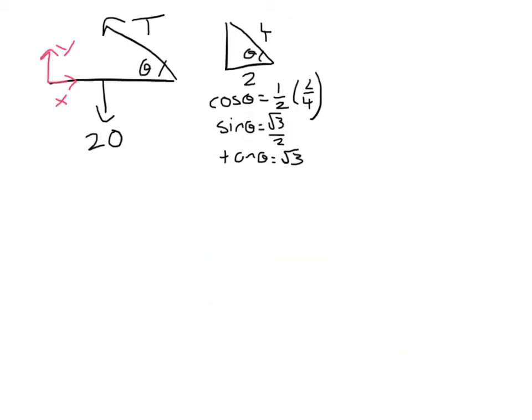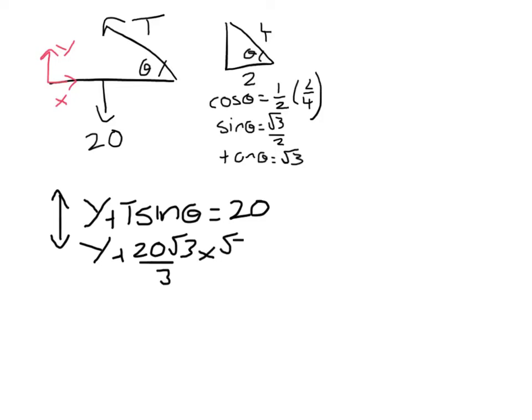To work out the reaction of the hinge, I'm going to resolve into horizontal and vertical components, starting with the vertical, with y acting up, and T sin theta has to equal 20. So y plus 20 root 3 over 3 multiplied by root 3 over 2 has to equal 20. So y plus 10 equals 20, y will be 10.